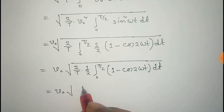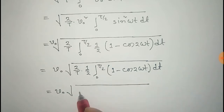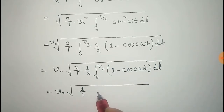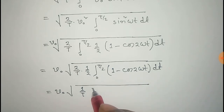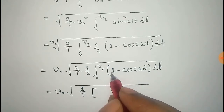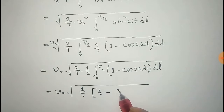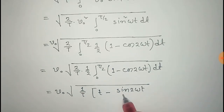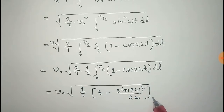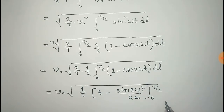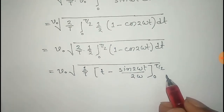Evaluating the integral: the integral of 1 is t, and the integral of cos(2ωt) is sin(2ωt) divided by 2ω, with the limit from 0 to T/2.